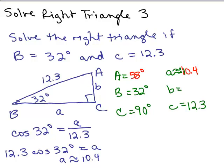Now be careful. To find b, you might want to use the Pythagorean theorem. But if you want to use the Pythagorean theorem, you can't use 10.4. You'd actually have to square this whole thing, 12.3 times the cosine of 32 degrees. You don't want to use anything rounded to figure out that answer. So let's do it a different way.